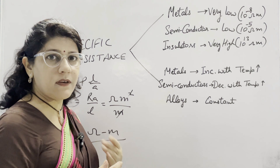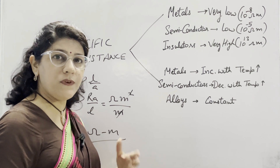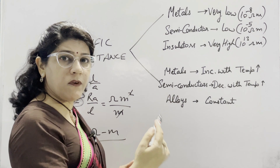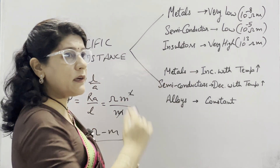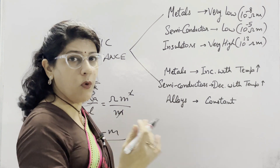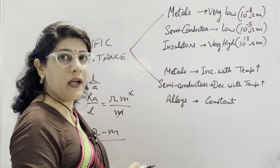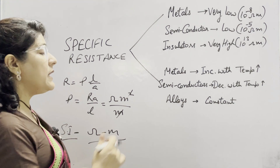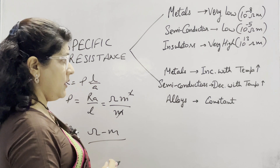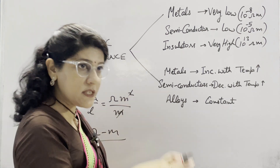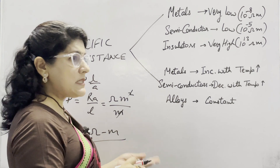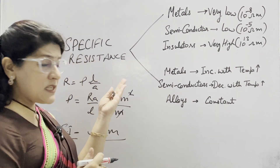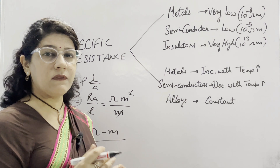Specific resistance is a characteristic property of a substance. For metals, it is very low — of the order of 10⁻⁸ Ohm·meter. For semiconductors, it is of the order of 10⁻⁵ Ohm·meter. For insulators, it is very high — of the order of 10¹³ Ohm·meter. Regarding temperature: for metals, resistivity increases with temperature; for semiconductors, it decreases with temperature; for alloys such as constantan and manganin, it remains practically constant. The reciprocal of resistivity is conductivity, so conductivity = 1 / ρ.